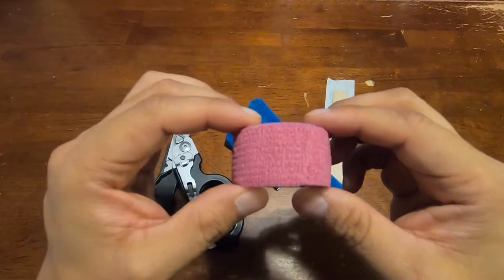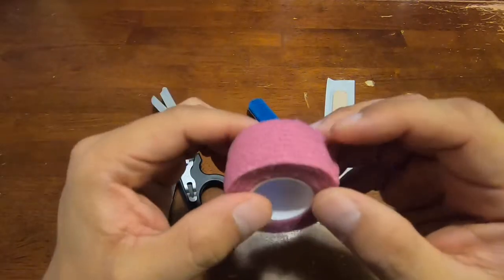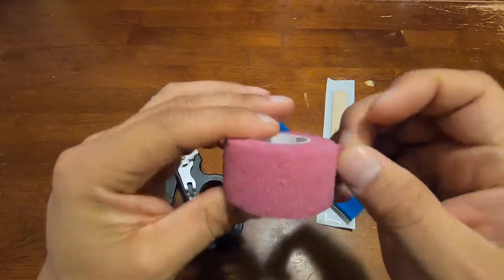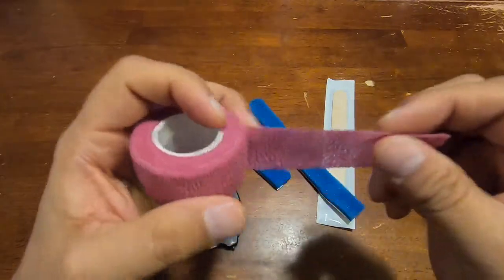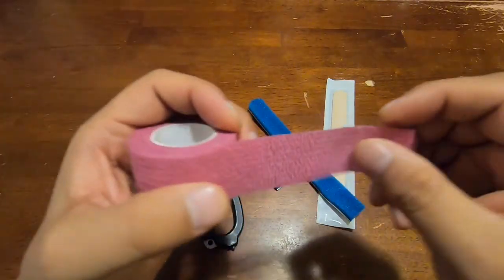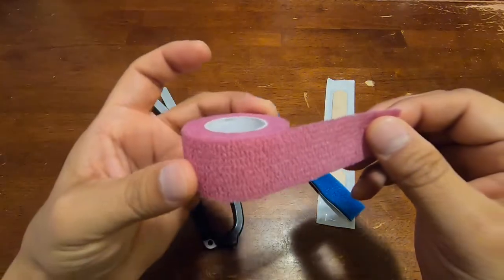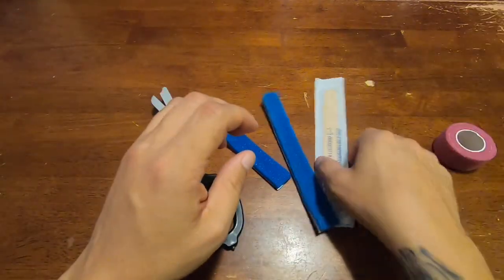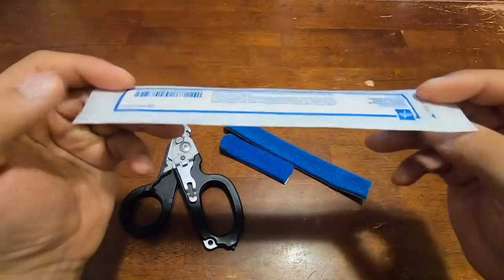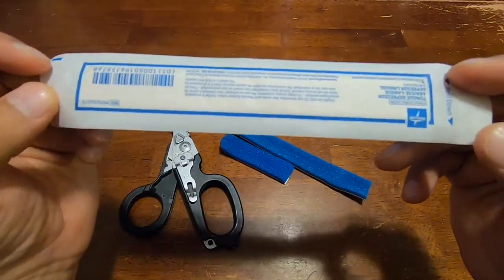So let's start. To begin would be what's called a Coban, or the off-brand name is Coflex. All it is is an elastic self-adhering bandage, sticks to itself, very durable, comes in different sizes.